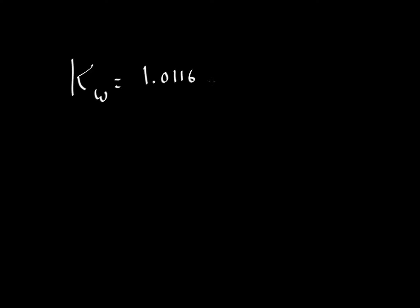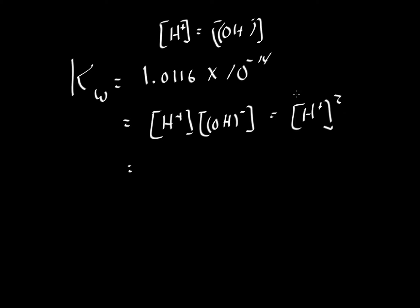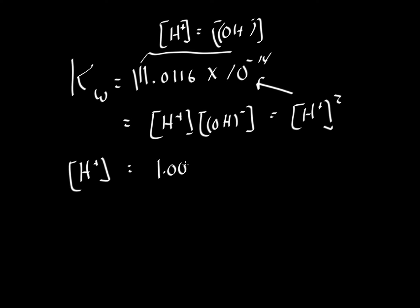The value of K sub W is about 1.0116 times 10 to the minus 14, and this equals the concentration of hydrogen multiplied by the concentration of hydroxyl. Since the concentration of hydrogen equals the concentration of hydroxyl ion, we can substitute and say KW equals the hydrogen ion concentration squared. Therefore, the concentration of hydrogen ion itself is the square root of KW. Taking the square root of 1.0116 times 10 to the minus 14 gives us 1.0058 times 10 to the minus 7.